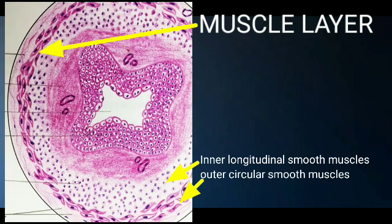This arrangement of smooth muscles is opposite to that of the digestive tract. In the digestive tract muscularis externa, we have inner circular and outer longitudinal layers, but here in the ureter it is inner longitudinal and outer circular. In the middle and lower part of the ureter, a third longitudinal smooth muscle layer is also present, though these three layers are not very clearly differentiated.